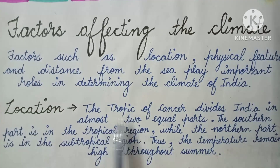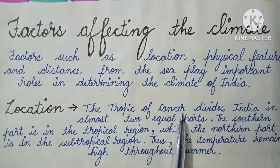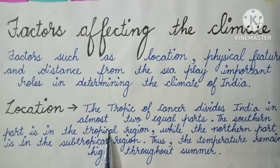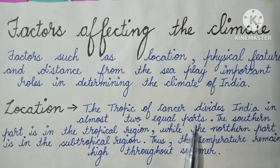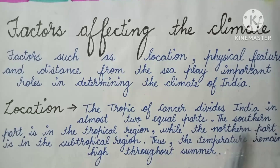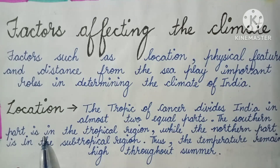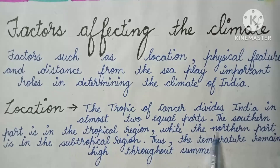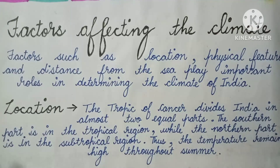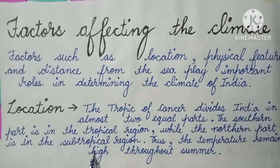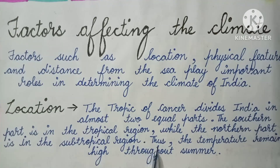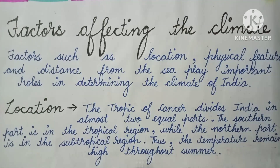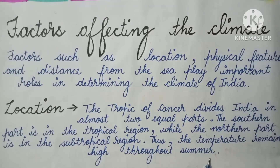The first factor is location. The Tropic of Cancer divides India into almost two equal parts. The southern part is in the tropical region while the northern part is in the subtropical region. Thus the temperature remains high throughout the summer.